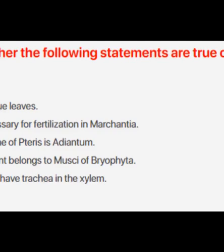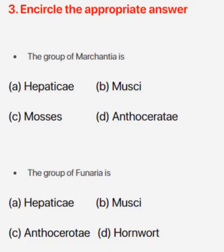Now for the MCQs, encircle the appropriate answer. Write all the options and mark the correct one with a black pointer. Number one: the group of Marchantia is — correct answer is (a) hepaticae. Number two: the group of Funaria is — correct answer is (b) musci.